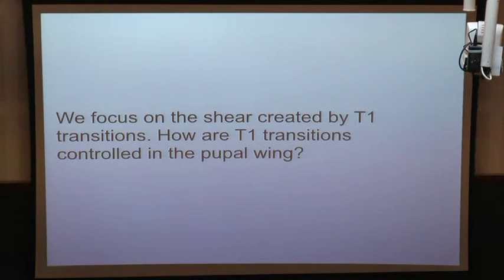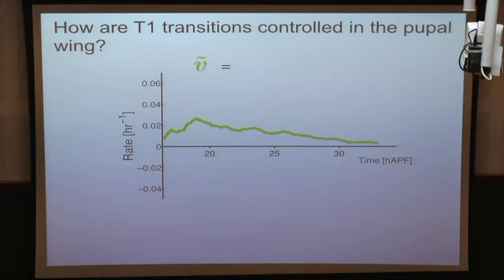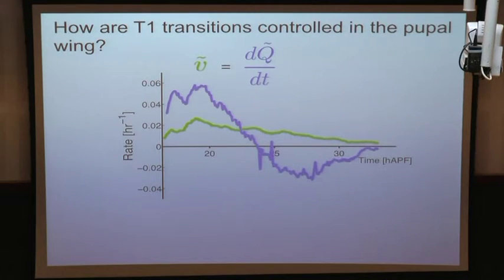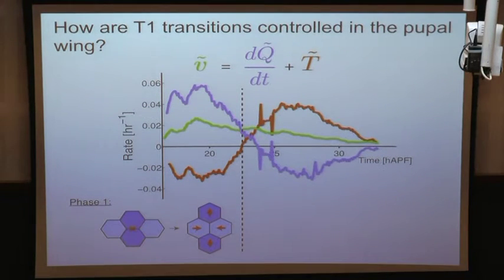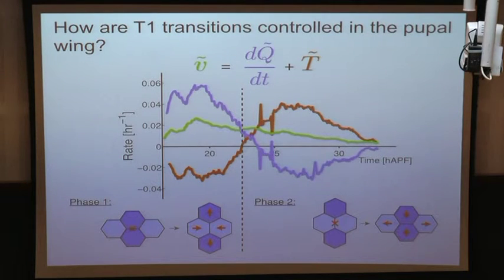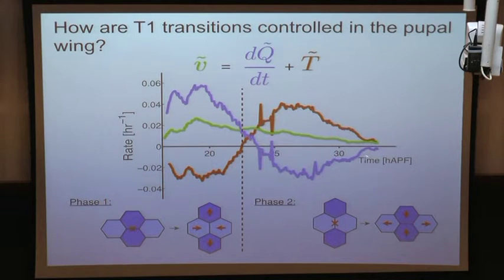Focusing on shear from T1 transitions: the tissue shear is the yellow curve, cell shape change first positive then negative as cells first elongate then lose elongation. The shear created by T1 transitions (red) follows a characteristic curve — first negative then positive — meaning initially more T1 transitions remove horizontal bonds, then a second phase where vertical bonds are preferentially removed. The next question is what controls these T1 transitions and why this sign change occurs.